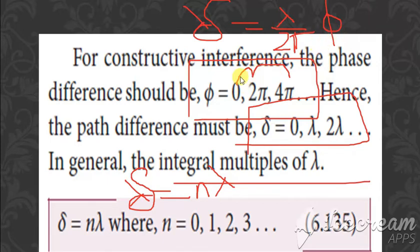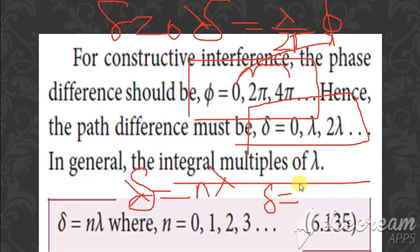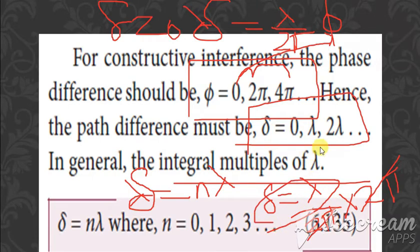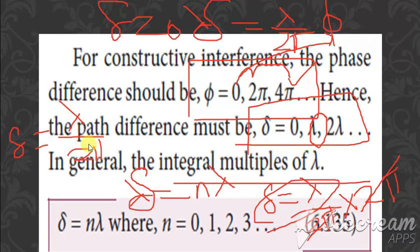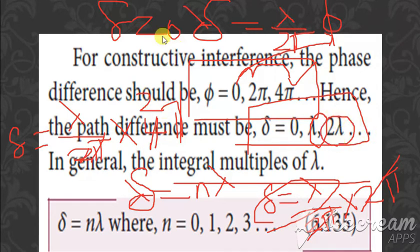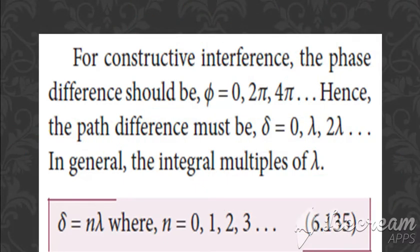Verifying: if φ = 0, then δ = 0. If φ = 2π, then δ = (λ / 2π) × 2π = λ. If φ = 4π, then δ = (λ / 2π) × 4π = 2λ. So we get 0, λ, and 2λ, confirming that for constructive interference δ = nλ.